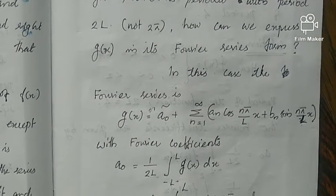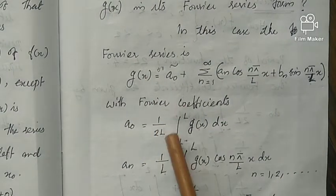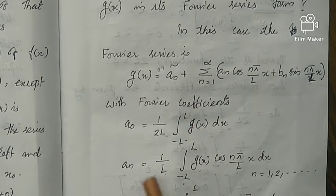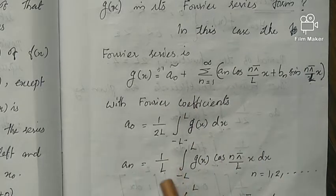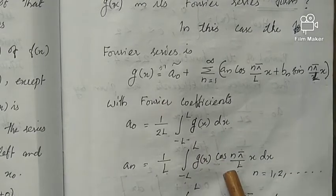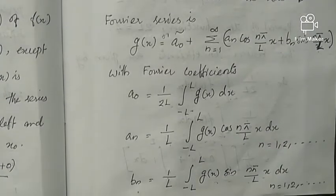Then the Fourier coefficients are given by: a_0 equals 1/(2L) times integral from -L to L of g(x) dx, and a_n as 1/L times integral -L to L of g(x) cos(nπ/L × x) dx, and b_n as...